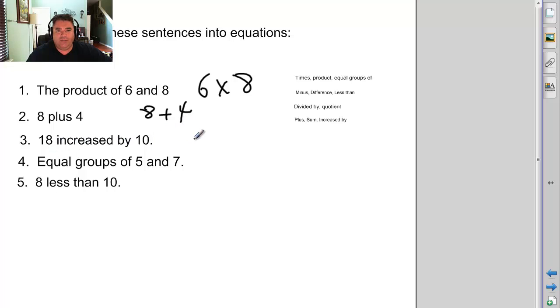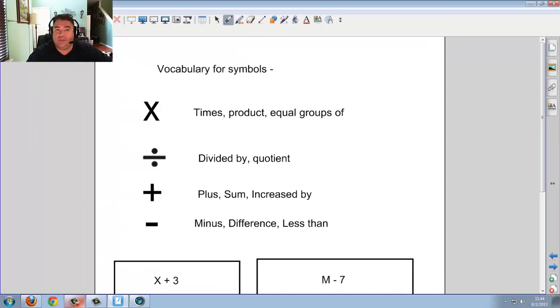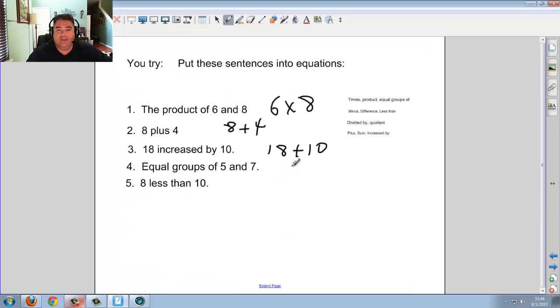18 increased by 10. So you have 18 and the word increased by means to add. Equal groups of 5 and 7. Now if you remember, when you flip back, equal groups was in times. You might have forgot. So you just put 5 times 7. Does it matter which one comes first? Well, with times, they do work either way. But usually, I put the first thing first and the second thing second.